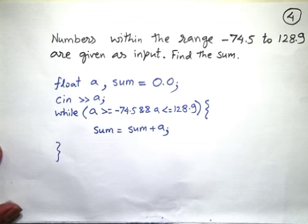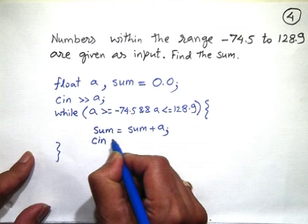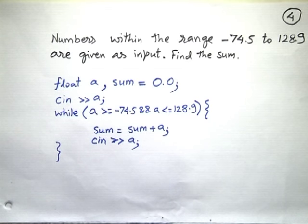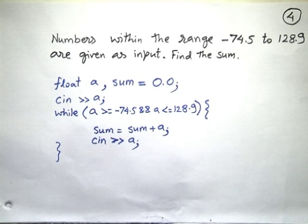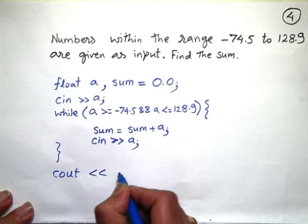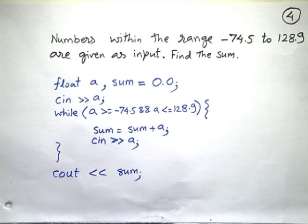After adding A to sum, I must read the next number inside the loop; otherwise it will keep adding the same A without changing. So the structure is: read the first number; if within range go in and add it to sum; read the next number; come back to the watchman; if within range again add it; read the third number; and so on — until a number outside the range arrives. When you come out, output sum. The assumption is: any number outside the prescribed valid range will terminate the iteration.